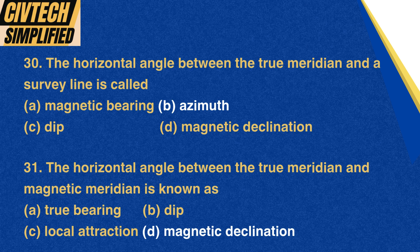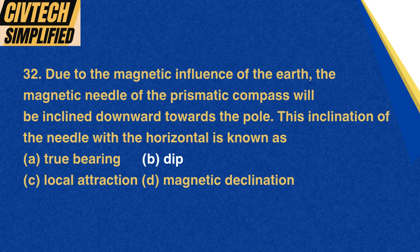Question 31: The horizontal angle between the true meridian and magnetic meridian is known as: A. True bearing, B. Dip, C. Local attraction, D. Magnetic declination. Correct option: D. Magnetic declination. Question 32: Due to the magnetic influence of the earth, the magnetic needle of the prismatic compass will be inclined downward towards the pole. This inclination of the needle with the horizontal is known as: A. True bearing, B. Dip, C. Local attraction, D. Magnetic declination. Correct option: B. Dip.